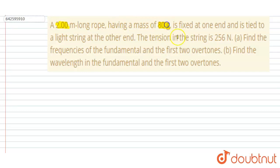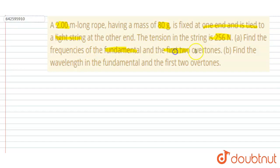A two meter long rope having mass 80 grams is fixed at one end and tied to a light string at the other end. The tension in this string is 256 N. Find the frequency for the fundamental and first two overtones, and find the wavelength for the fundamental and first two overtones.